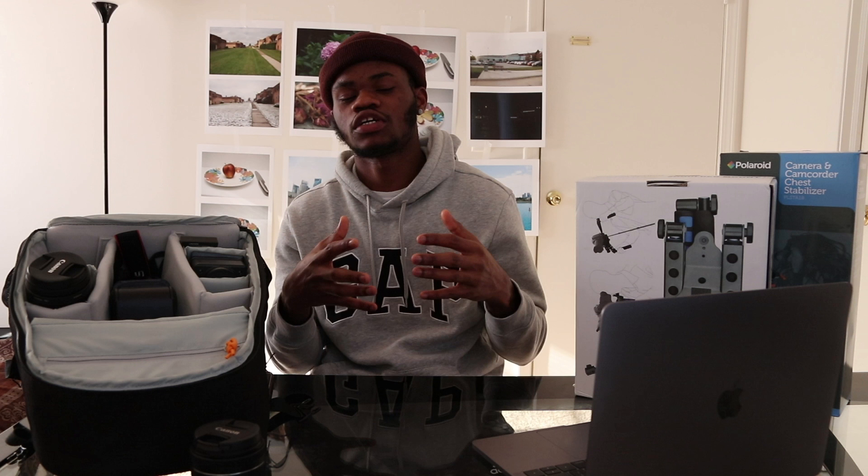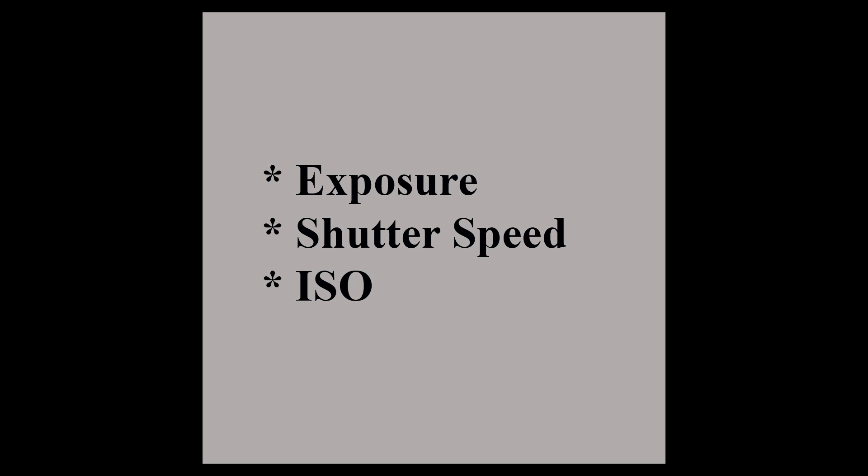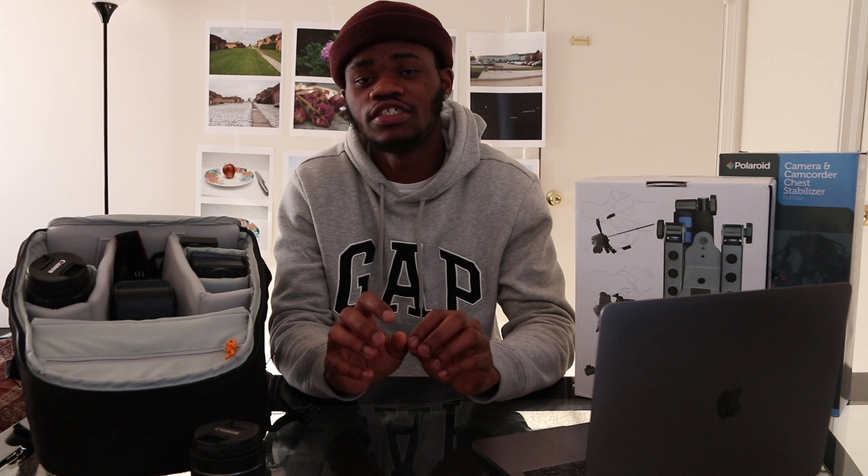Today I'll be talking about the settings. We have different settings in the Canon — I'll be talking about the exposure, the shutter speed, and the ISO. These are basically the settings that bring out the beauty of an image in a camera.